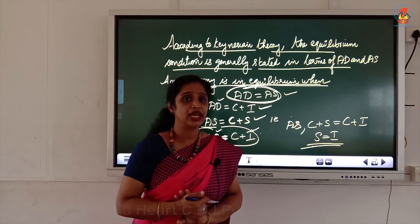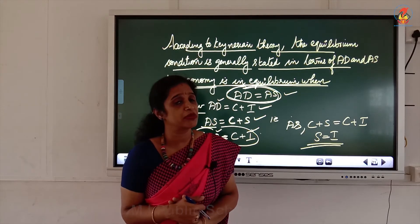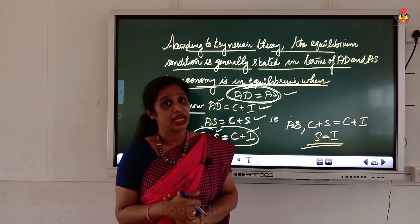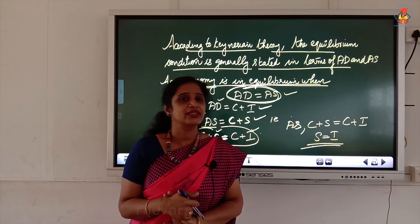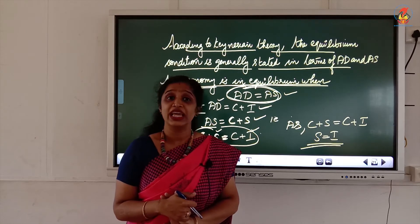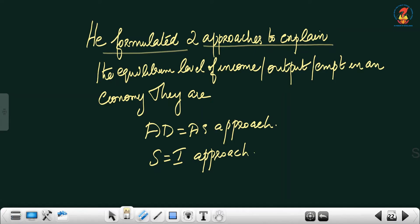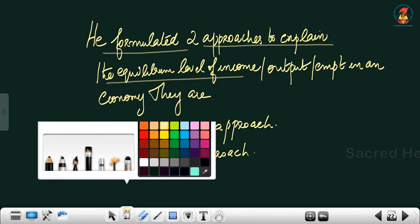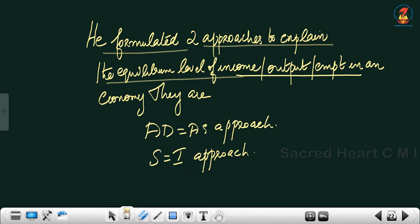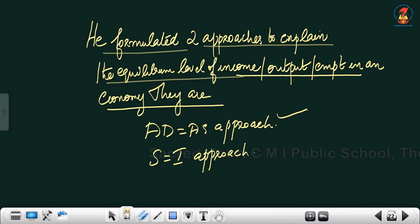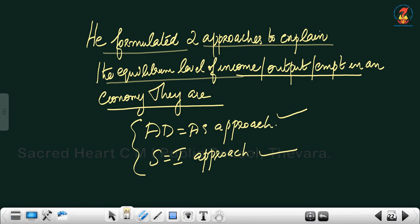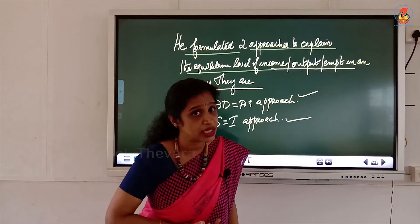Thus Keynes derived two approaches to explain the equilibrium level of income and employment: the AD-AS approach and the S equals I approach, where S stands for saving and I stands for investment. The AD-AS approach states AD equals C plus I equals AS, and the saving-investment approach states S equals I.